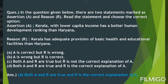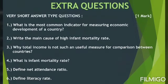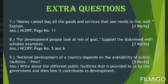The previous year pre-boards questions are done. Moving to a few extra questions I have prepared. Please go through these simple questions — answers are in your NCERT textbook. Question number seven: money cannot buy all the goods and services that one needs to live well. The answer is on page number 11 of NCERT under the topic public facilities. Read that paragraph and frame your answer according to the marks.